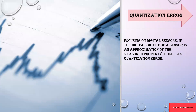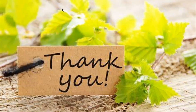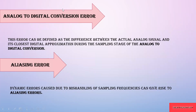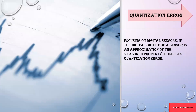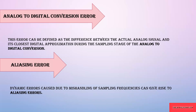Next is quantization error. Quantization error focuses on the digital output of a sensor — it is the approximation given to a reading. For example, if you get 99.5, you round it to 100. You are quantizing or sampling the output. That kind of error is called quantization error.